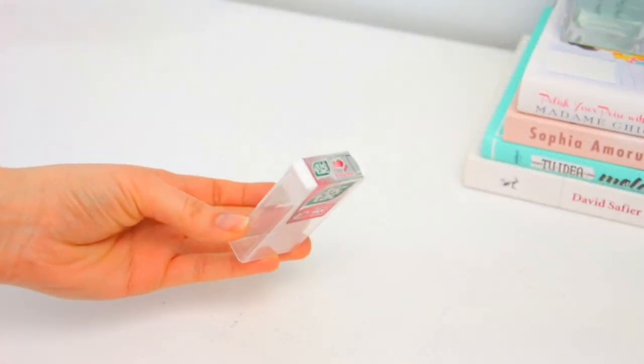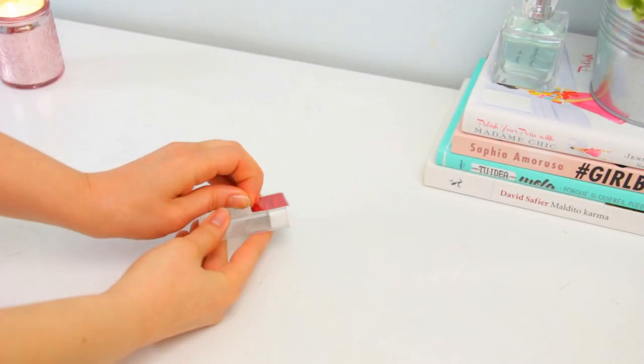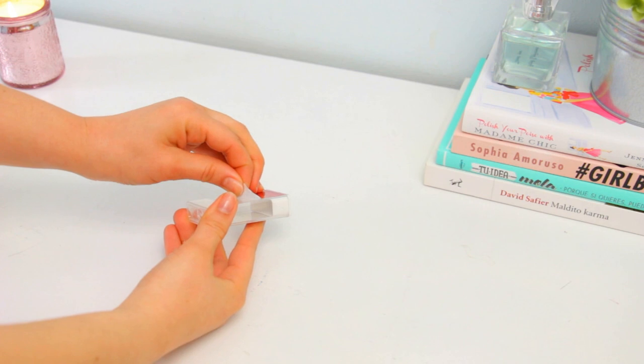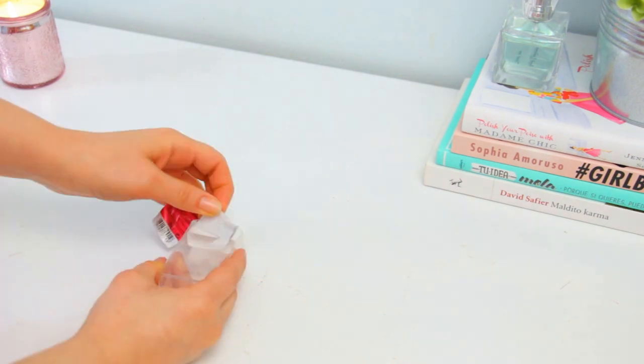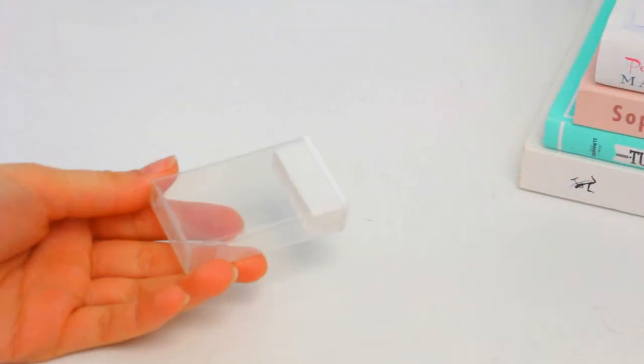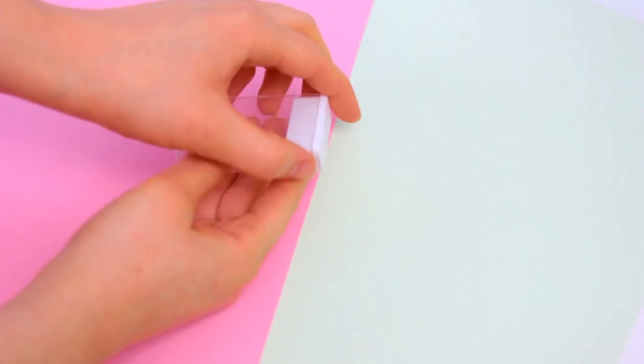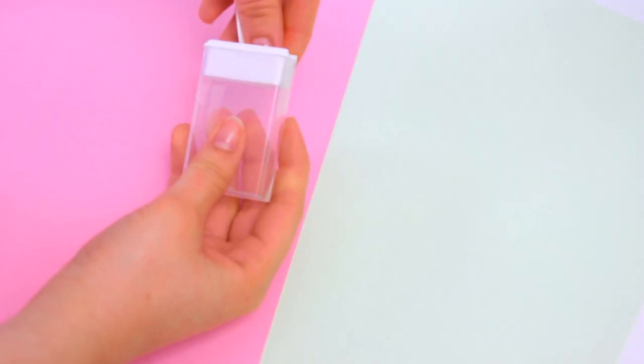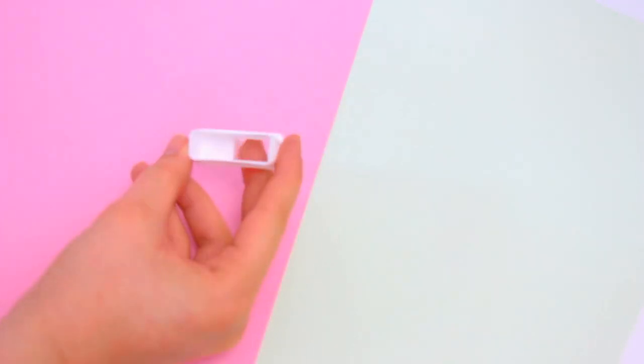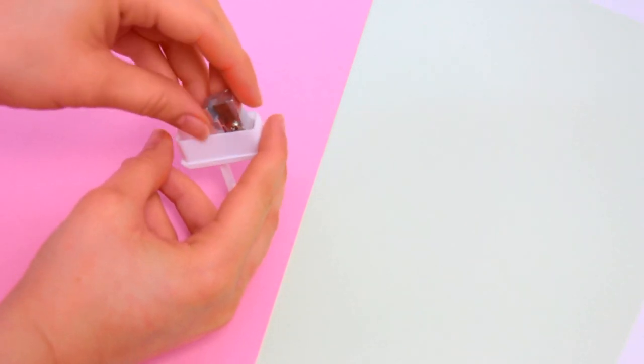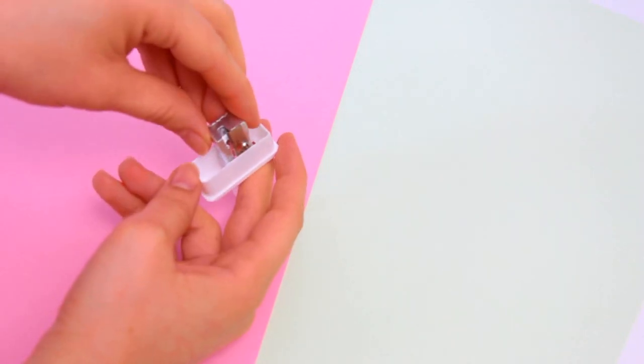You will need a tic-tac container like this and start off removing the label. Once it's clean, take out the white cap thingy and check out if your sharpener fits. Obviously the smaller the better.